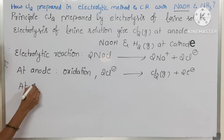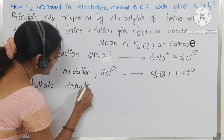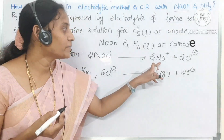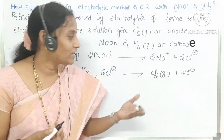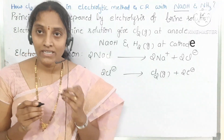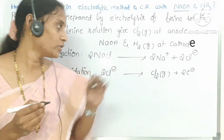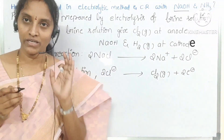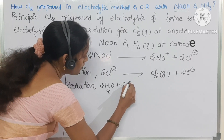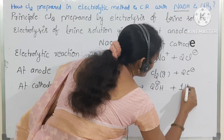At the cathode, a reduction reaction occurs. You might think the Na⁺ ion would take the 2 electrons and be reduced, but reduction depends upon reduction potentials — that is a different topic in electrochemistry. Here, the water molecule is reduced: 2 moles of water take 2 moles of electrons to form 2 moles of hydroxide ions and 1 mole of H₂ gas.